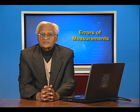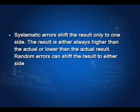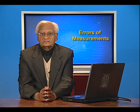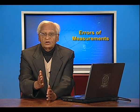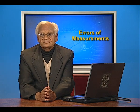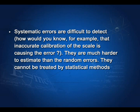Systematic errors shift the result only to one side — the result is either always higher than the actual value or always lower. Random errors, which we shall see presently, can shift the result to either side. Systematic errors are difficult to detect; for example, you may not know that the calibration of the scale is incorrect. Therefore, systematic errors are much harder to estimate than random errors and cannot be treated by statistical methods.